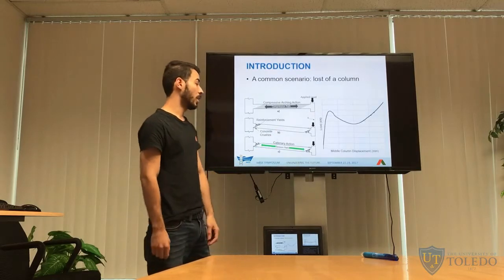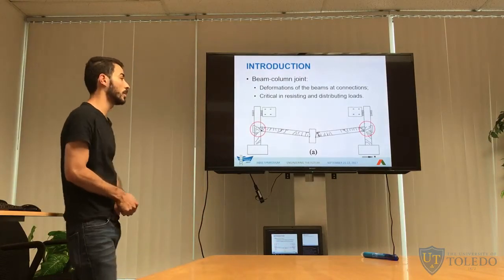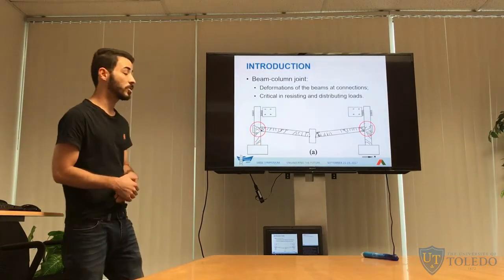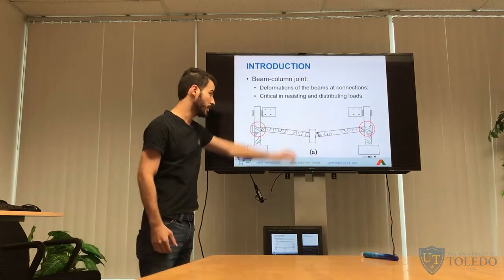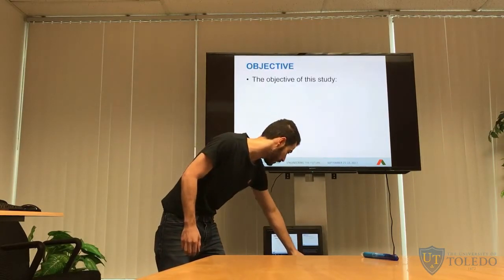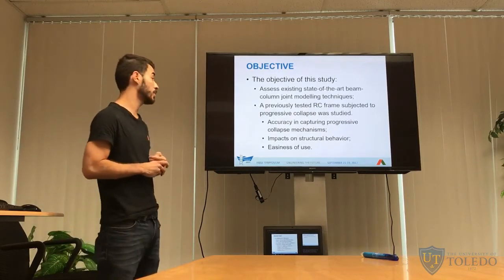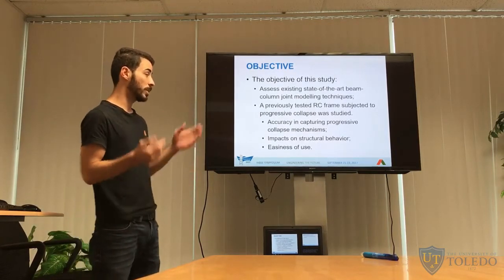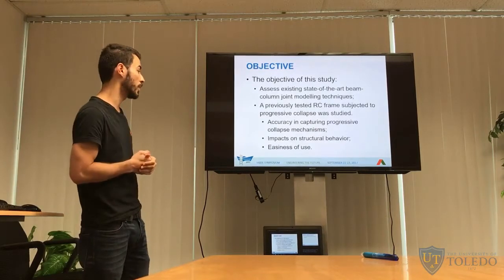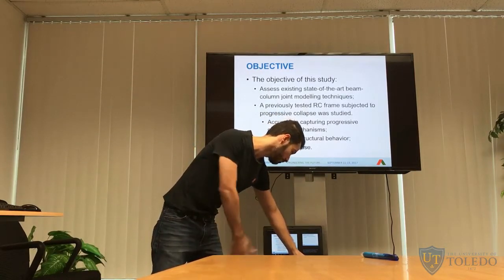In this scenario, the beam-column joint is a critical element because it controls the deformations of the beams and connections, and is critical in resisting and distributing the loads applied on the lost column to the existing elements. In this study, we assess the existing state-of-the-art of beam-column joint modeling techniques using a previously tested reinforced concrete frame subjected to progressive collapse by loss of a column. We also analyze the accuracy in capturing the three progressive collapse mechanisms, their impacts on structural behavior, and the ease of use of each beam-column joint modeling theory.